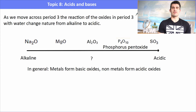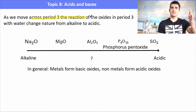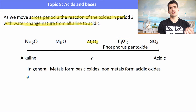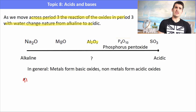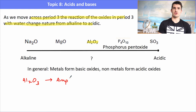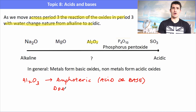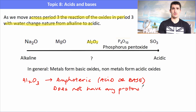Moving across Period 3, the reactions of oxides with water shift from alkaline to acidic — from sodium oxide through to sulfur trioxide. The exception is aluminium oxide, which is an amphoteric substance. It doesn't have a proton to donate so it can't be amphiprotic, but it can act as either an acid or a base. It is not a Brønsted-Lowry acid because it cannot donate a proton.